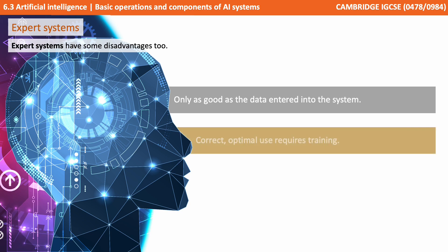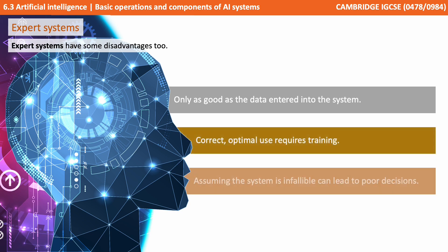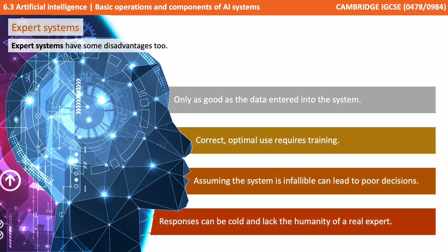Of course, as with all systems, there are some disadvantages. They can only ever be as good as the data or facts entered into the system. The system therefore needs to be used correctly and this takes training. Dangerous decisions can be made by users who assume the expert system is infallible. And the responses provided can appear very cold and lack the human touch offered by a real expert.